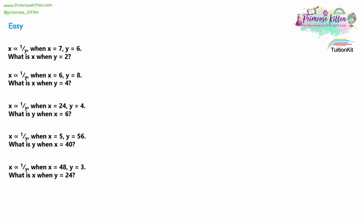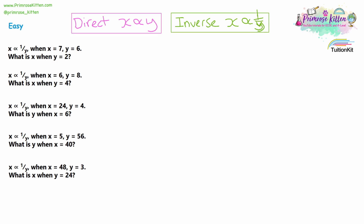In the last video we looked at direct proportion. If you have direct proportion, then x is directly proportional to y. Now in this video we're going to look at inverse proportion, where x is inversely proportional to y. We show inversely by having a 1 over the y — we write y as a fraction with a numerator of 1.